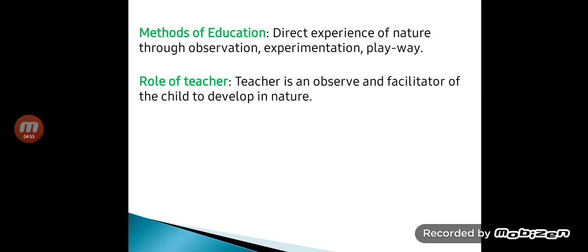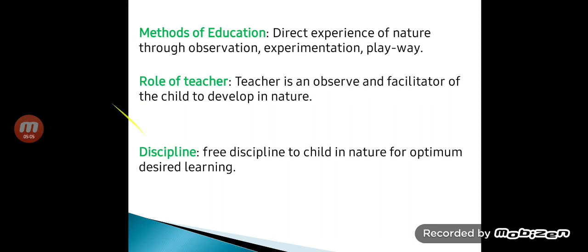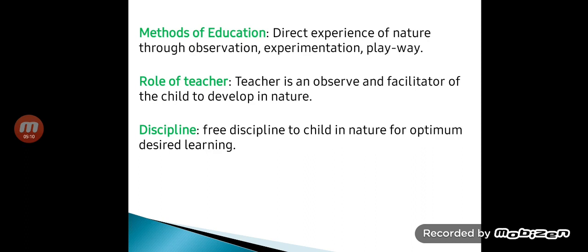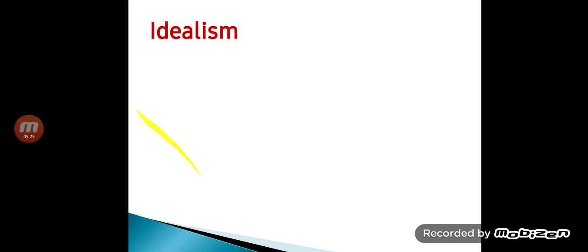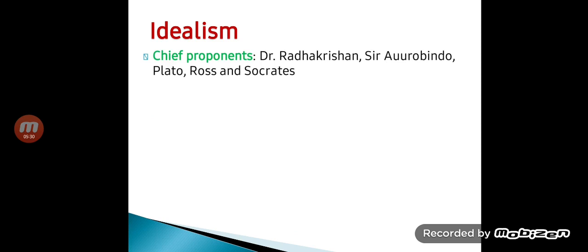The role of a teacher in naturalism is to act as an observer and facilitator, helping the child develop within nature. Regarding discipline, they don't follow rigid discipline but allow students to move freely, giving them free discipline so they can acquire optimal learning. Next is idealism, whose chief proponents are Dr. Radhakrishnan, Sri Aurobindo, Plato, Rousseau, and Socrates.